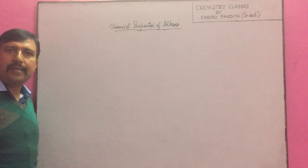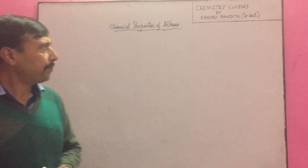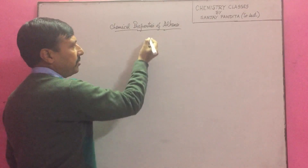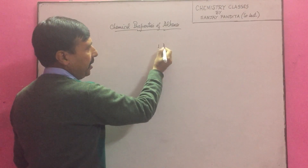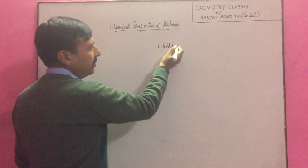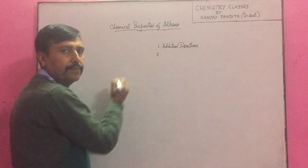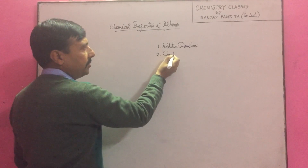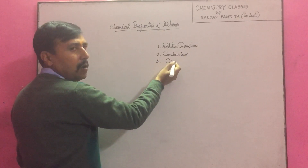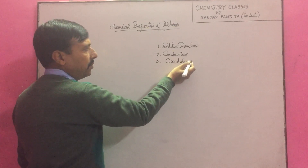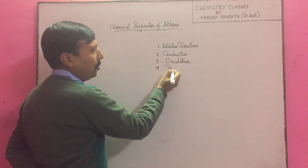Since alkenes are unsaturated hydrocarbons, therefore they show addition reactions. The main chemical properties of alkenes are: first, addition reactions; second, combustion; third, oxidation; fourth, polymerization.